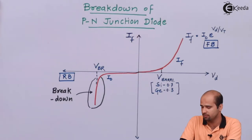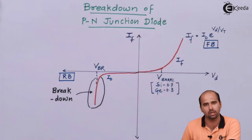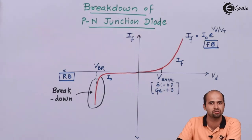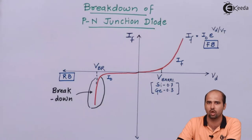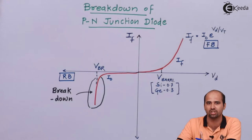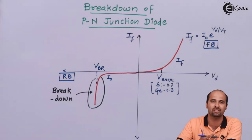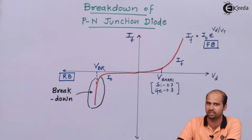Now, before learning the breakdown region, we will learn these characteristics, which we have learned in the previous video. This breakdown region occurs due to the fact that minority charge carriers are also present in the P as well as N region of the diode. When these charge carriers get accelerated due to the external bias potential into the opposite side of the silicon material, these electrons break the covalent bond and carry more electrons, resulting in a very high amount of current flowing through the PN junction diode, which can damage the diode.